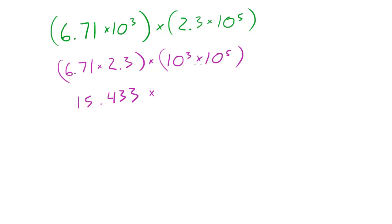And now let's go ahead and multiply 10 to the third times 10 to the fifth. Now in order to multiply 10 to the whatever power here's what you do. It's 10 to the 3 plus 5. That's the rule for multiplying those numbers. So what we have here is 15.433. That doesn't change. Times 10 to the eighth. Just like that.